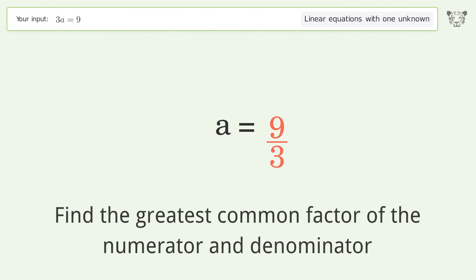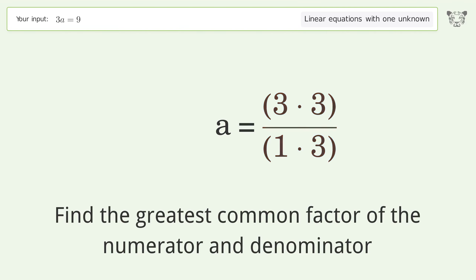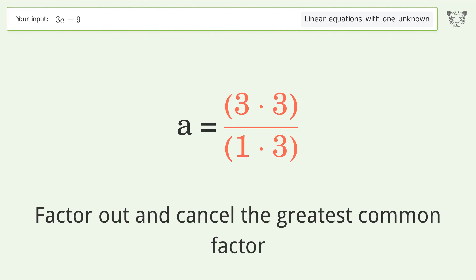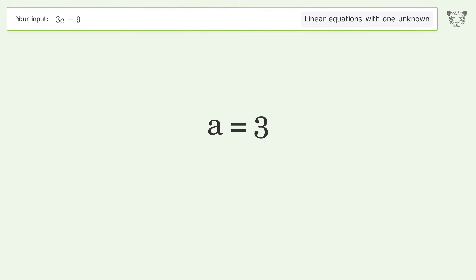Find the greatest common factor of the numerator and denominator. Factor out and cancel the greatest common factor. And so the final result is A equals 3.